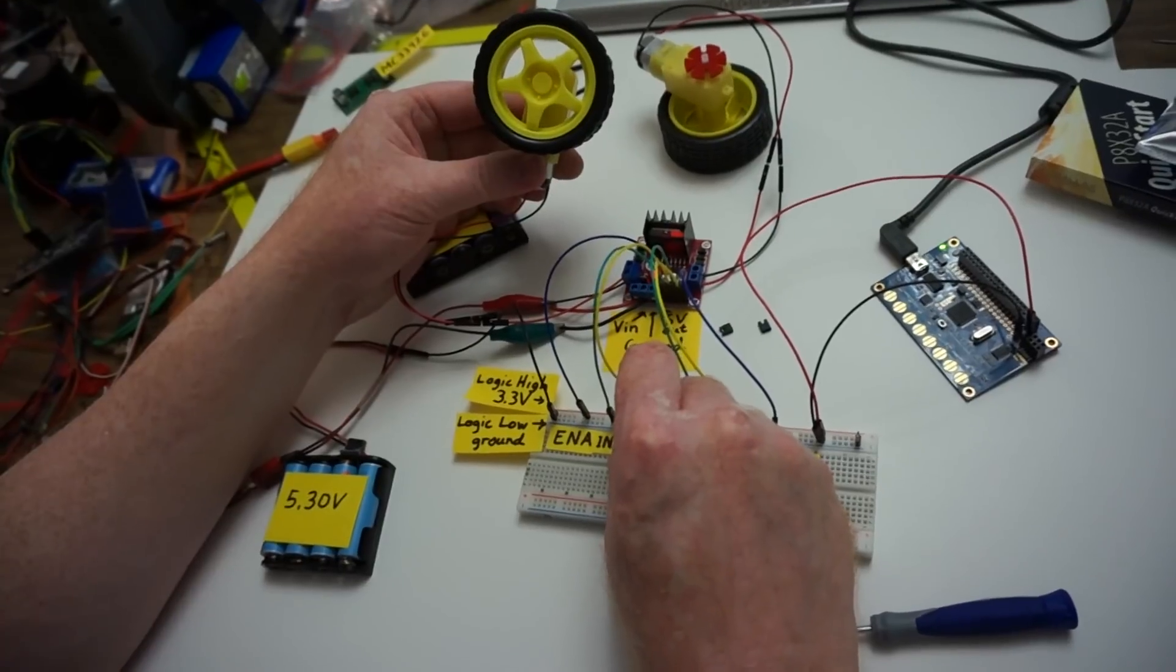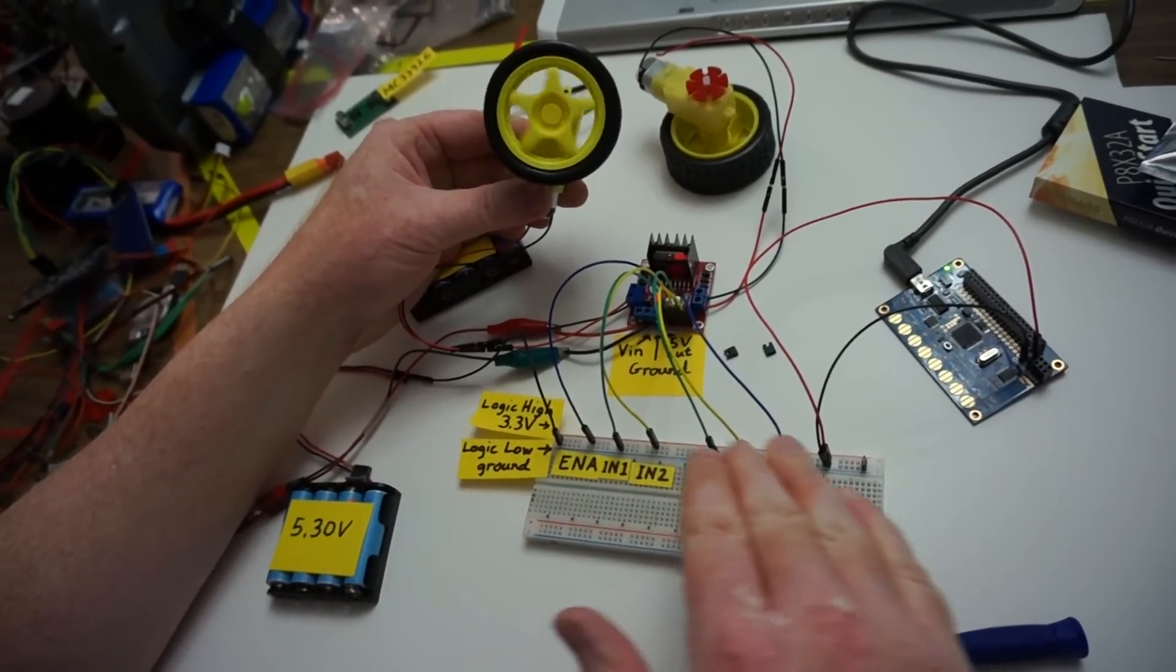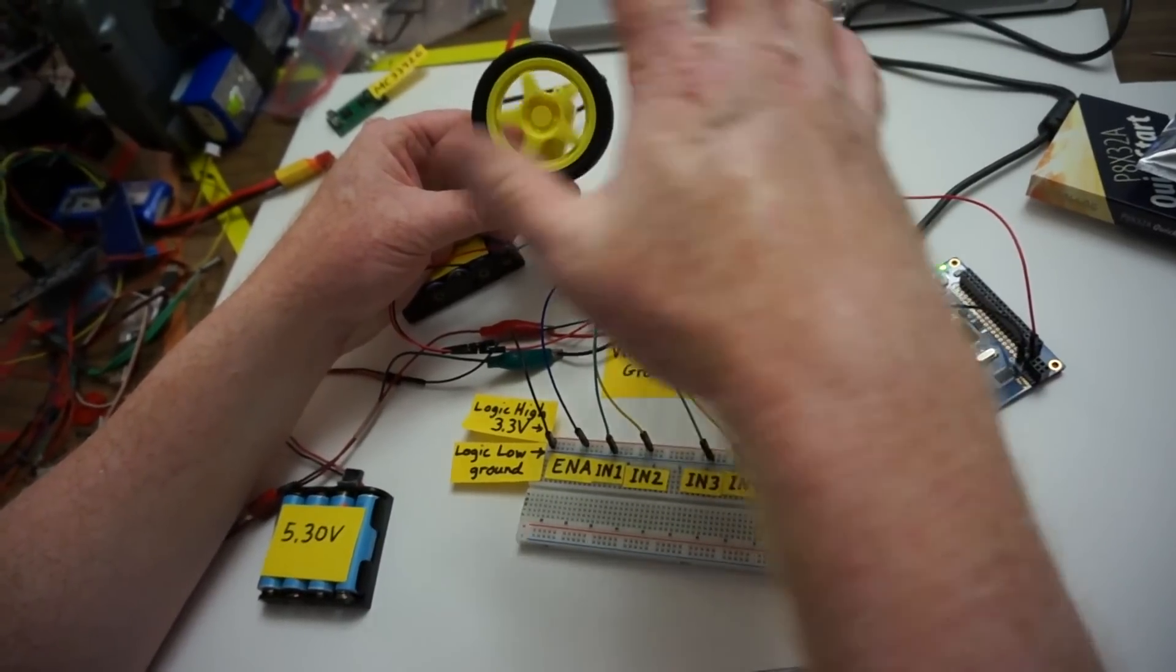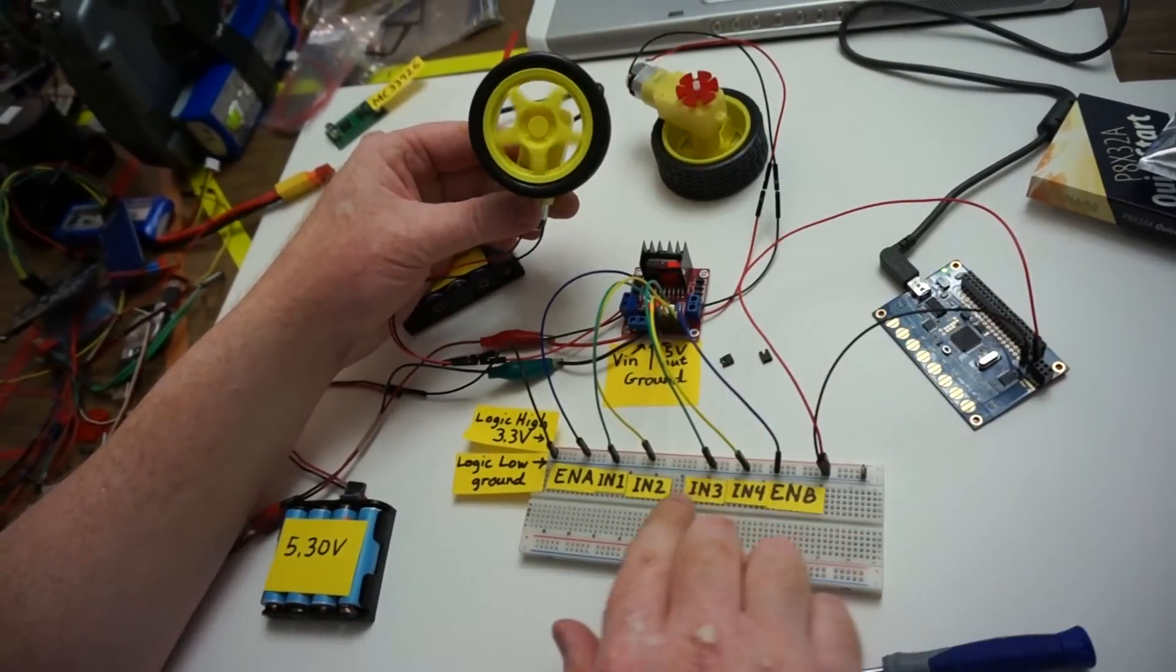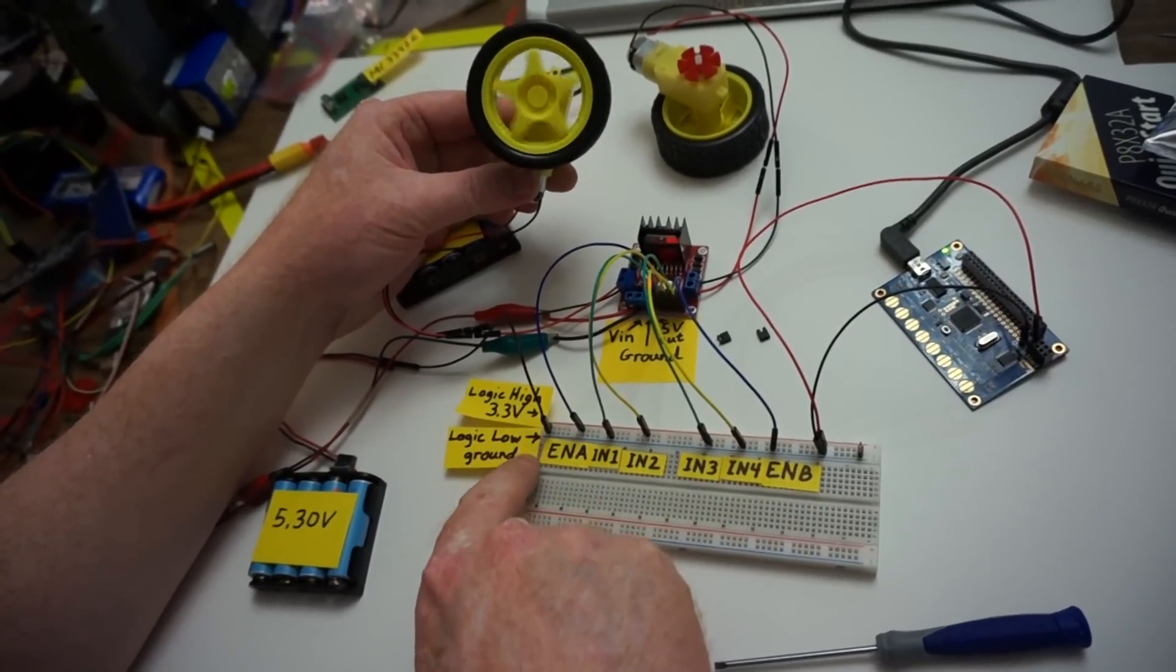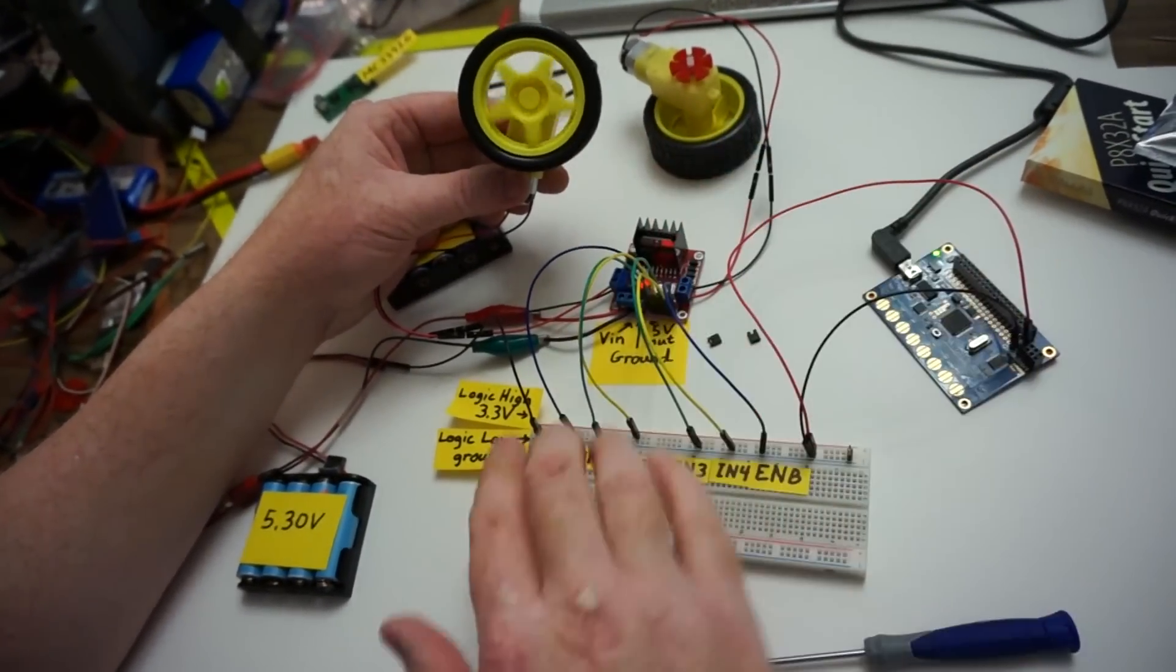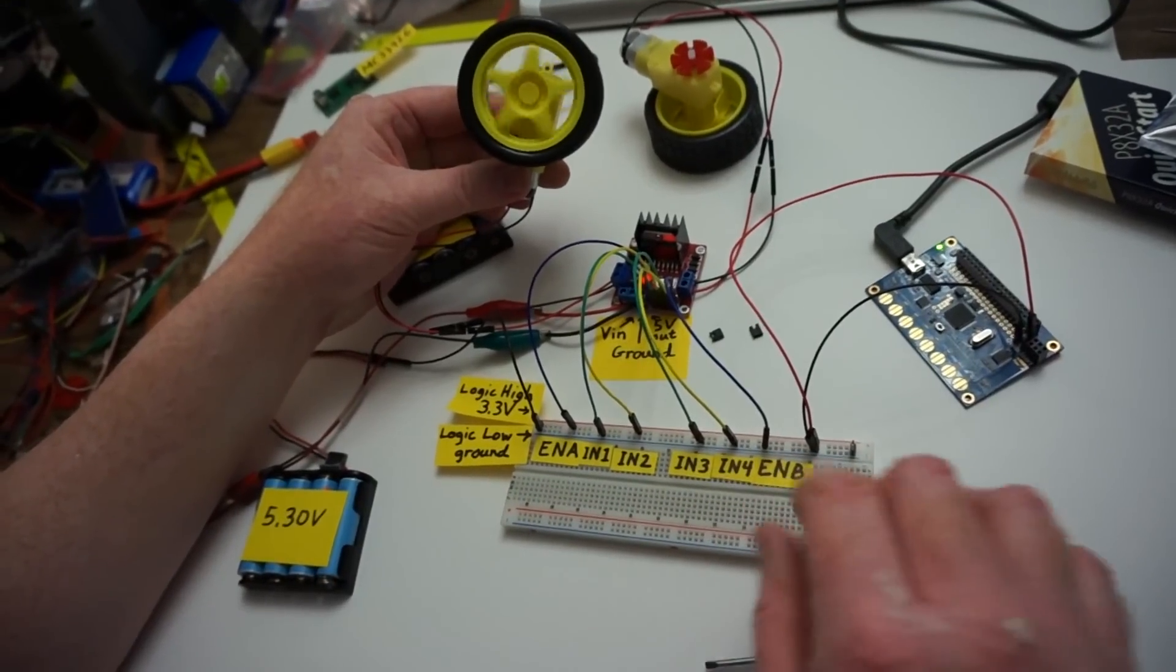If we put this input pin high, it will switch directions. So that's one way you can test just to make sure your H-bridge and your motor is working correctly. You can just connect the wires directly to a voltage high source and a voltage low source. And you can kind of get the logic straight in your head by just doing it this way first.